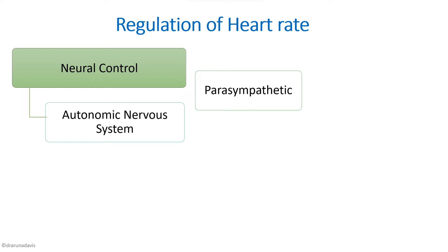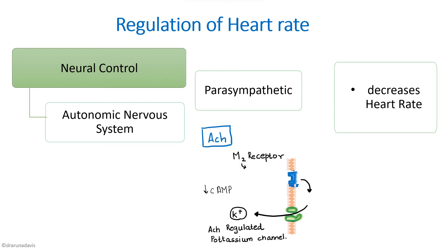The parasympathetic system decreases the heart rate and does not have much effect on myocardial contractility. The mechanism of action is that acetylcholine acts on M2 receptors present on the heart, causing increased potassium efflux by opening acetylcholine-regulated potassium channels. It also causes a decrease in cyclic AMP, and all this leads to a decrease in heart rate.